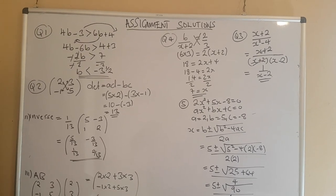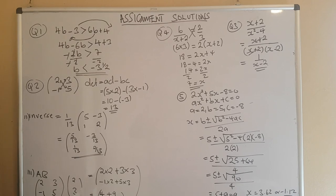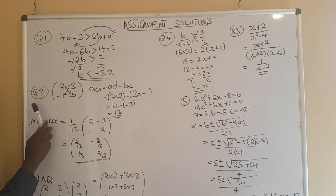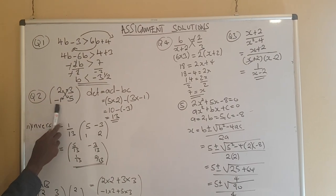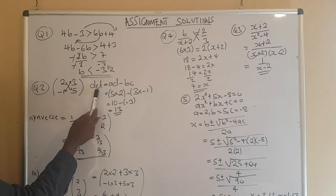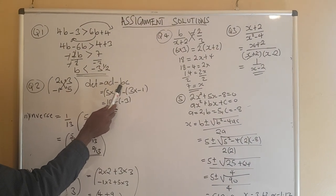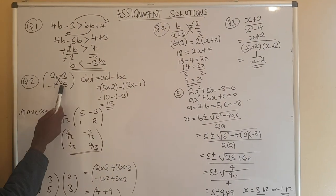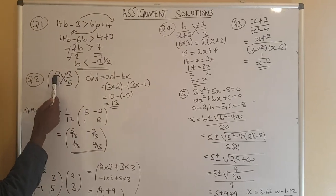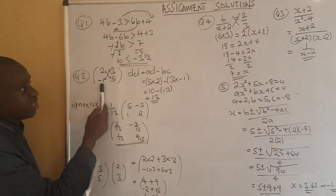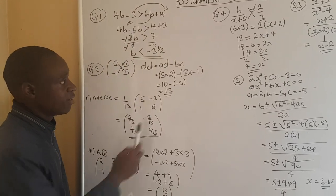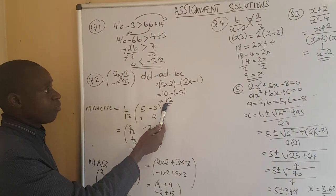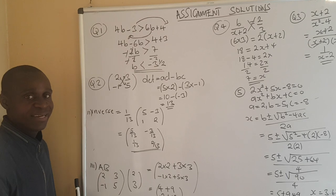Question 2 was based on matrices, a topic which features almost every year in the examination. We are given the matrix: 2, 3, negative 1, and 5. The determinant formula is AD minus BC. Substituting the values — A is 2, D is 5, B is 3, C is negative 1 — and computing gives us positive 13. So 13 was the value of the determinant.